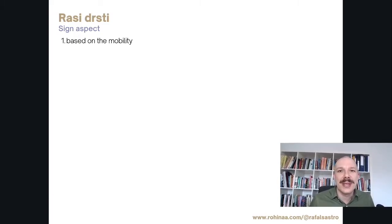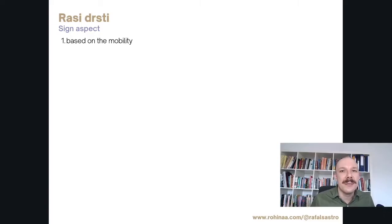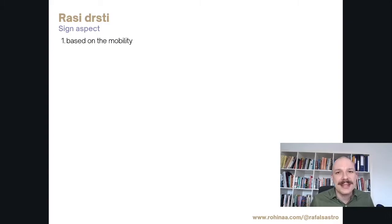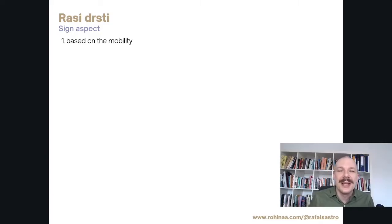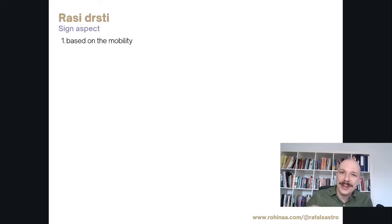The second group is called Sthira — we have Taurus, Leo, Scorpio, and Aquarius, or Vrisha, Simha, Vrishchika, and Kumbha. The third group is called Dvisva Rashi — the dual signs: Mithuna, Kanya, Dhanusha, and Meena, which is Gemini, Virgo, Sagittarius, and Pisces. The movable signs have a lot of energy, are enterprising and courageous. Sthira signs are more immovable and stubborn. Dvisva is something between these two extremes.